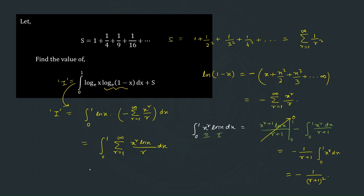That means we can write this as the summation from r=1 to infinity of the integral from 0 to 1 of x^r·log(x) dx, divided by r. Since r is constant with respect to this integral, and this integral equals −1/(r+1)², we get the result for I.